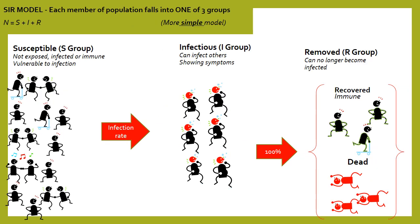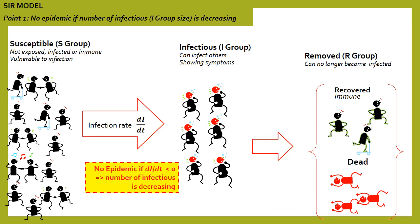A more simple model is the SIR model. The first key takeaway is that there is no epidemic if the size of the infectious population is decreasing. As long as the number of infectious individuals rises with time, we are dealing with an epidemic.